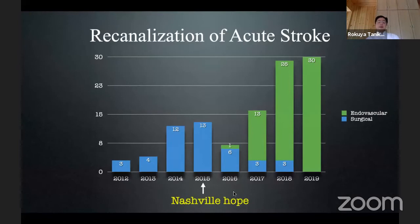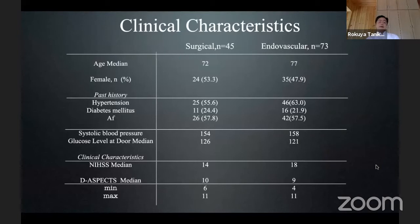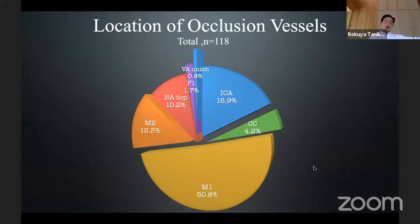This is an indication in our institute for acute stroke — the same as other big studies. In these eight years after I moved to Sapporo, we had 118 cases: 38 percent endovascular, 62 percent surgical, largely before and after MR CLEAN. The clinical characteristics between surgery and endovascular groups were almost the same.